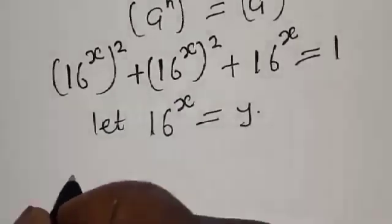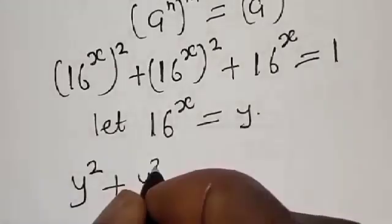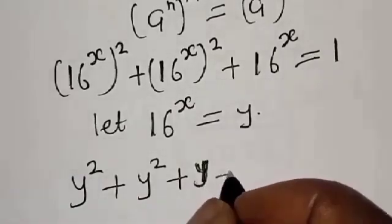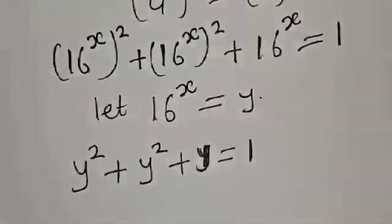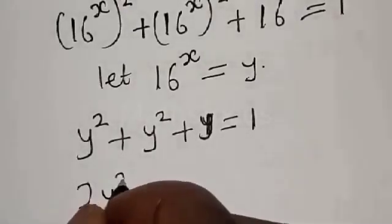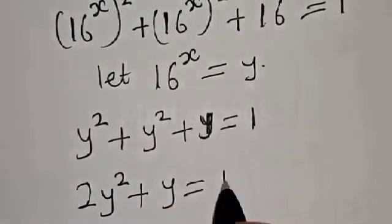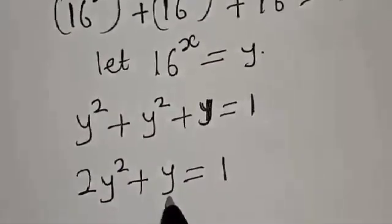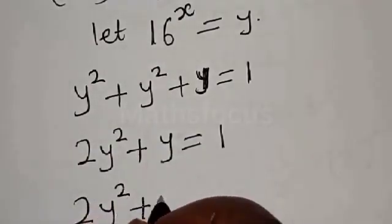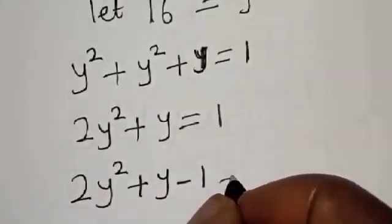Now let 16 raised to power x equal y. Then we have y squared plus y squared plus y is equal to 1. That gives us 2y squared plus y is equal to 1. Bringing the 1 to this side, we have 2y squared plus y minus 1 is equal to 0.